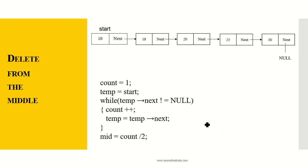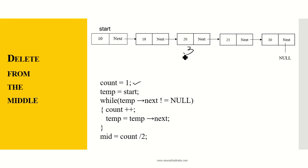Now we'll see how to delete from the middle. The procedure is the same — we first find the middle of the linked list, starting from count = 1. Since we're using integer division, 5 nodes would give mid = 2.5, which rounds to 3. So the third element is the one to be deleted. For deleting from a specified location, we will see the next video.